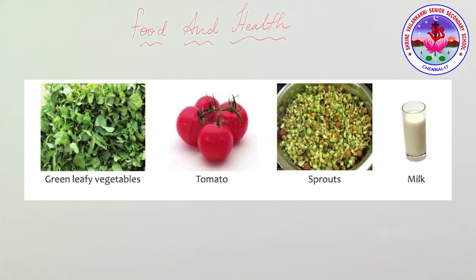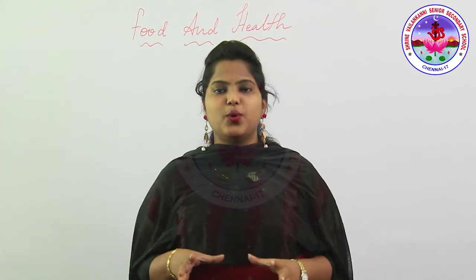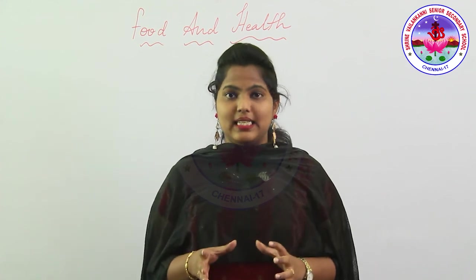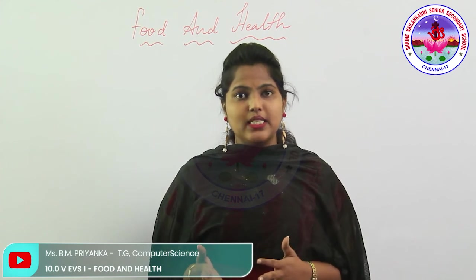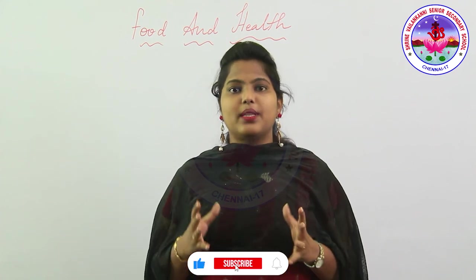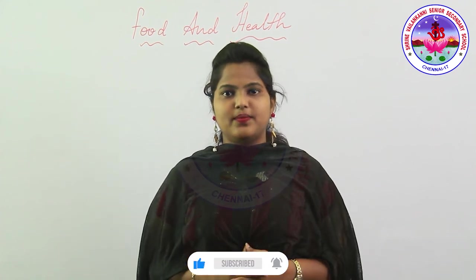Vitamin A deficiency together with protein malnutrition often affects pre-school children. Eating foods like carrots, papaya, pumpkin, mango, and milk will help prevent vitamin A deficiency in your body. In this video you understood the importance of a balanced diet. If any one nutrient is missing from the diet, a disease will be caused. It is very important to intake food with a balanced amount of all nutrients. Thank you, kids!